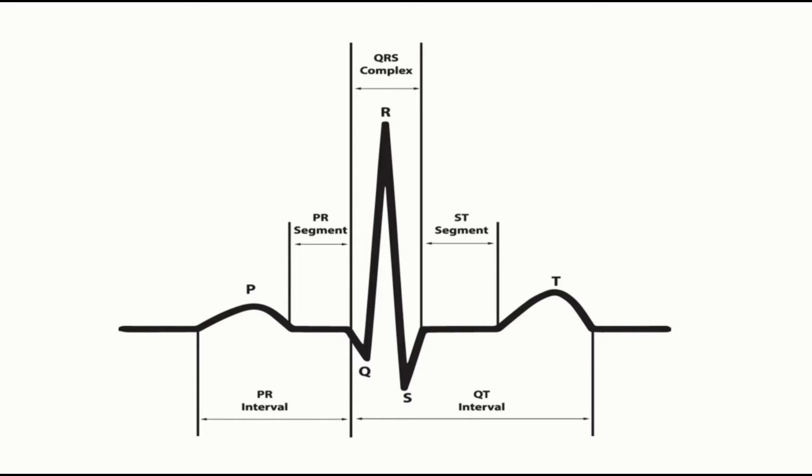This first positive deflection before QRS complex is called P wave. From the end of P wave to the beginning of QRS complex is called PR segment. Next, the triphasic wave is called QRS complex which consists of first negative Q wave, then positive R wave, and last negative deflection called S wave. After S wave and before beginning of T wave there is again an isoelectric period which is called ST segment, and at the end we have a positive deflection called T wave.